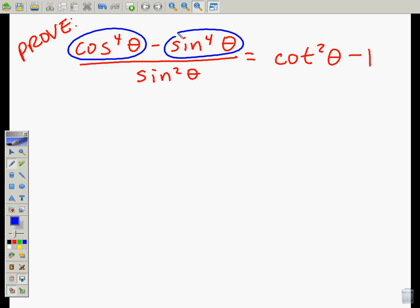The way we can do that is this. We can say that the cosine to the fourth of theta minus sine to the fourth of theta is equal to